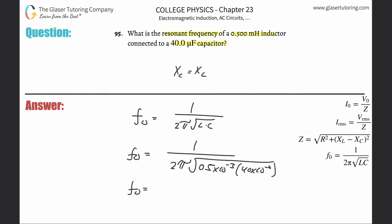And then just plug it on in. So 1 divided by 2 pi times the square root of 0.5 times 10 to the minus 3 times 40 times 10 to the minus 6. Close the parentheses.